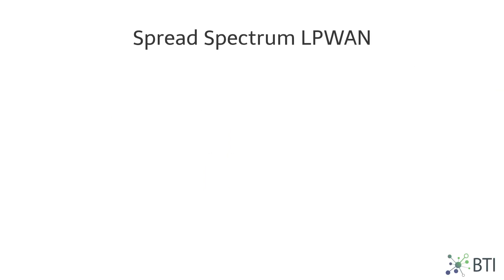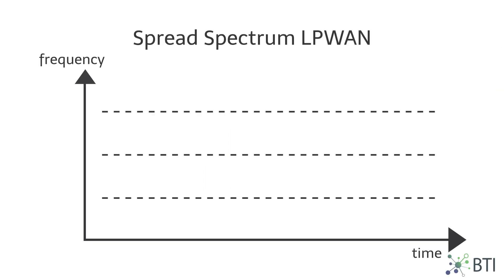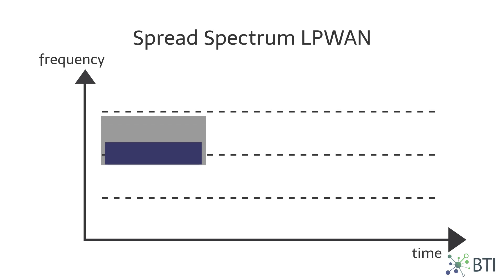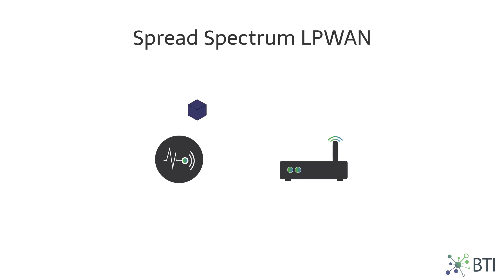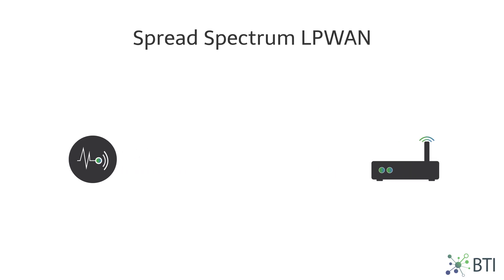3. Spread Spectrum. This solution transmits a narrow signal over a wider frequency band that is hard to detect and intercept. Coding is added to compensate for the high noise floor and improve receiver sensitivity, therefore achieving long range.